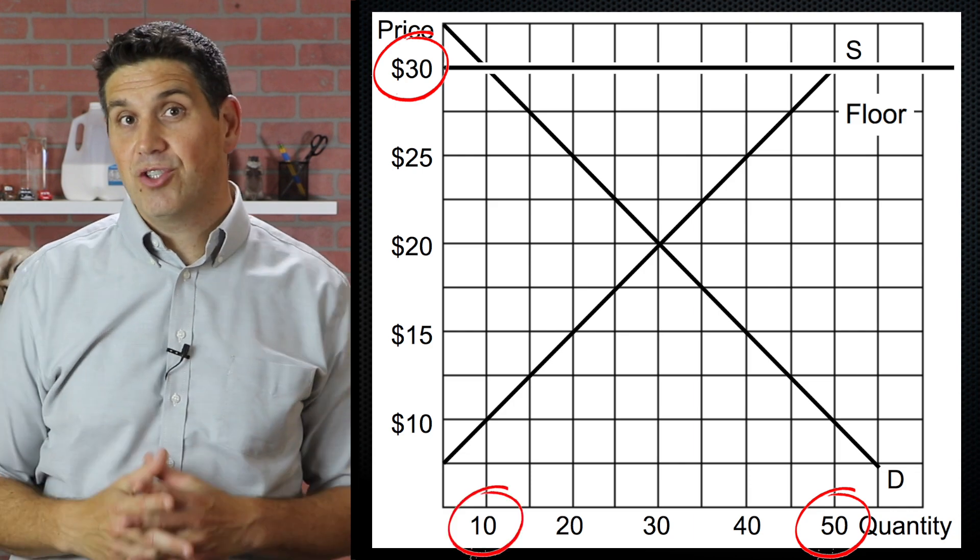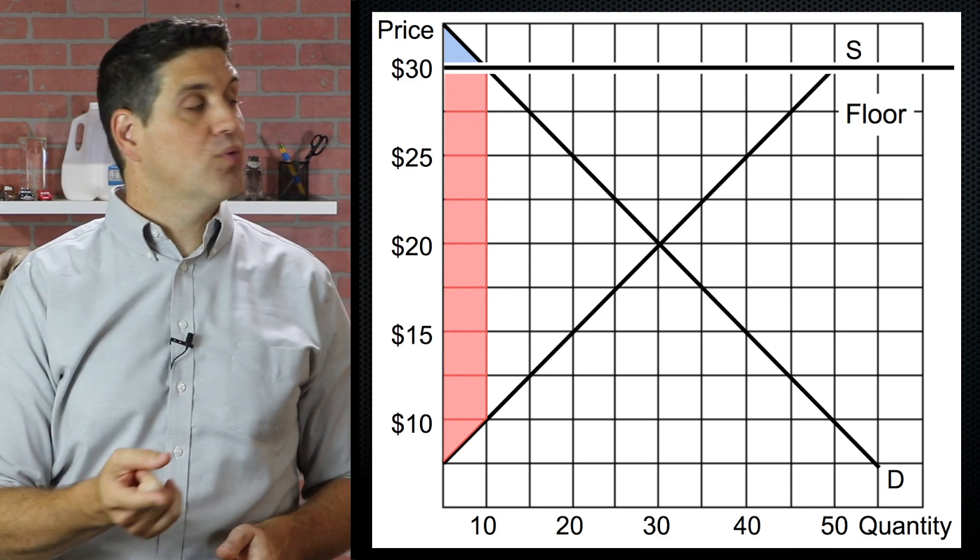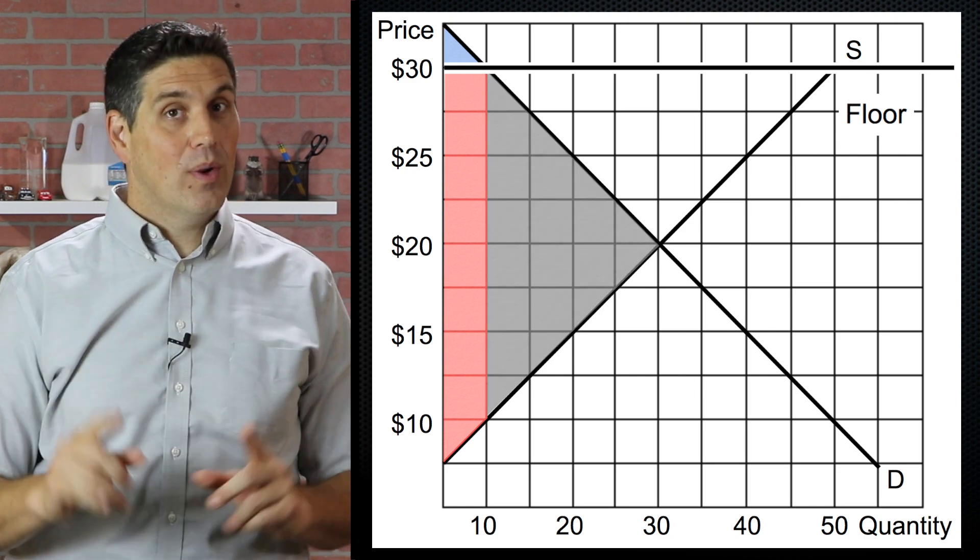They're only going to buy 10 million, so we have a surplus. So consumer surplus would be up here, producer surplus would be right here, and again, we'd have deadweight loss.